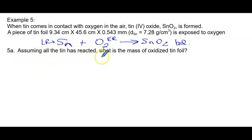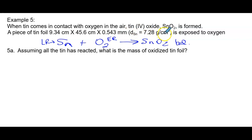Assuming all the tin is reacted, tin is my limiting reactant, so I must start with tin. As I read this, I see a density of tin — we will not start any problem with a density. Normally in stoichiometry you will start with a mass, a mole, or a volume. We will not use density as a starting point.